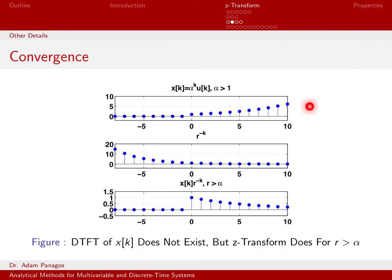However, in the definition of the z-transform, I'm not actually worried about just the signal being absolutely summable. I'm worried about the signal x of k times r to the negative k being absolutely summable.